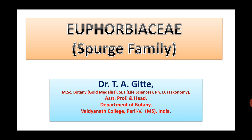Today's topic is Family Euphorbiaceae. Family Euphorbiaceae is also called as Spurge family or Euphorbia family. A spurge is a herb or shrub with milky latex, generally cultivated as an ornamental plant. The example of Spurge is genus Euphorbia.